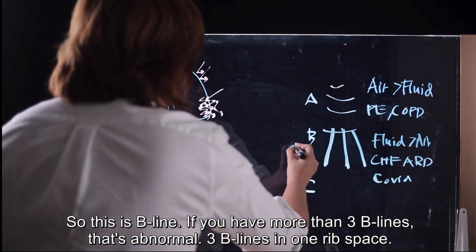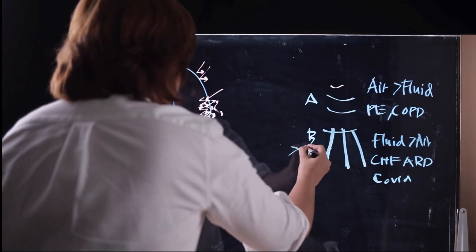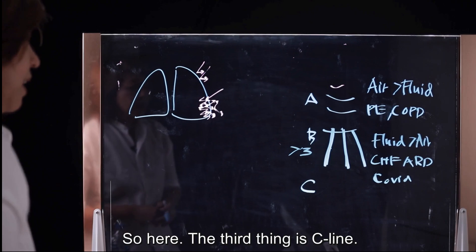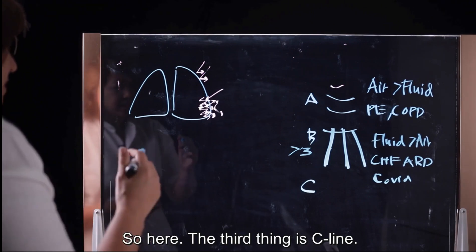So this is B-line. If you have more than three B-lines, it's abnormal. Three B-lines in one rib space. So I'm just going to note here.